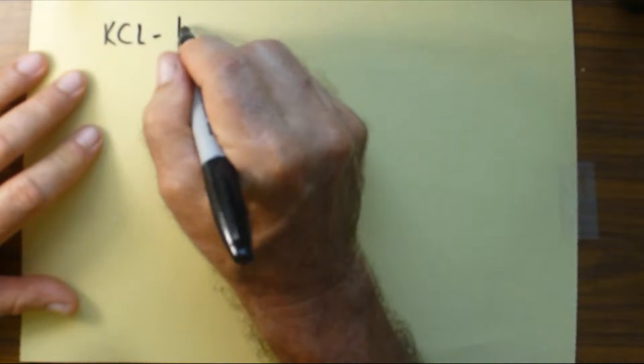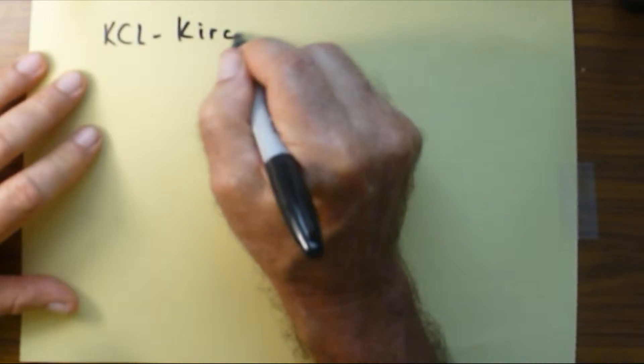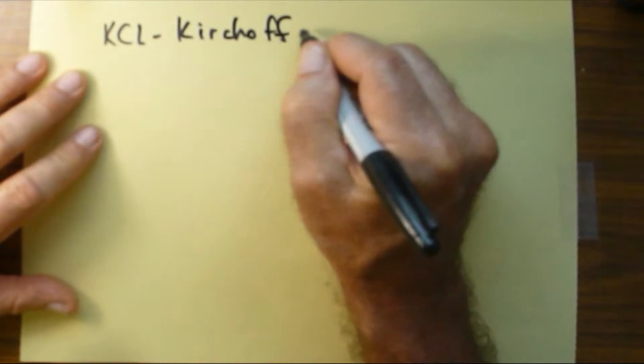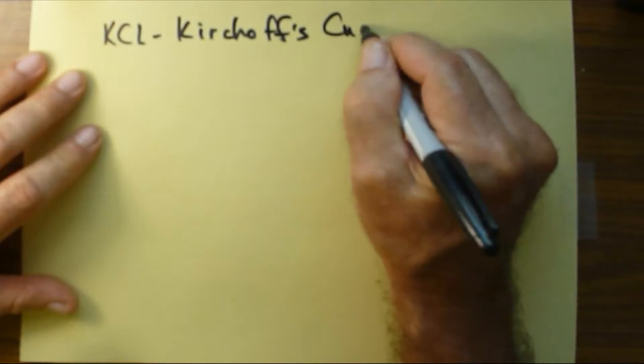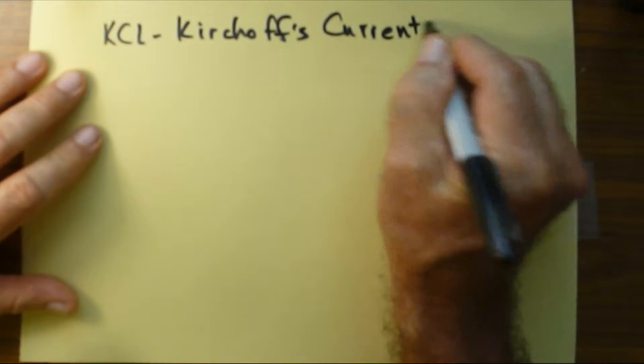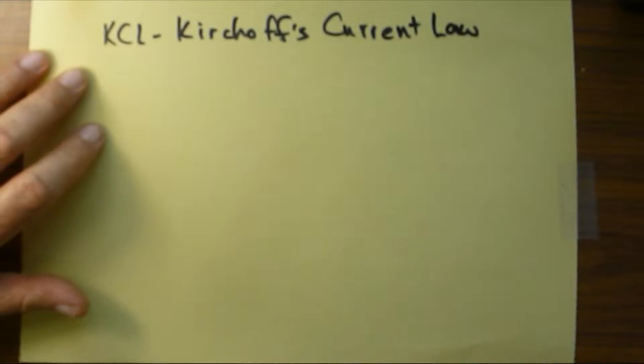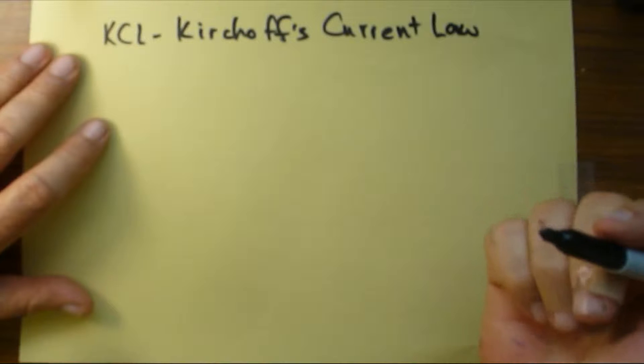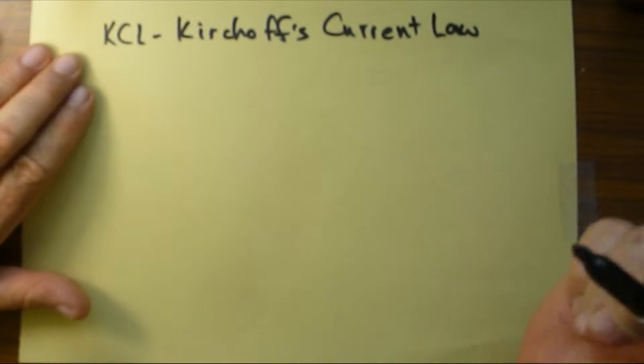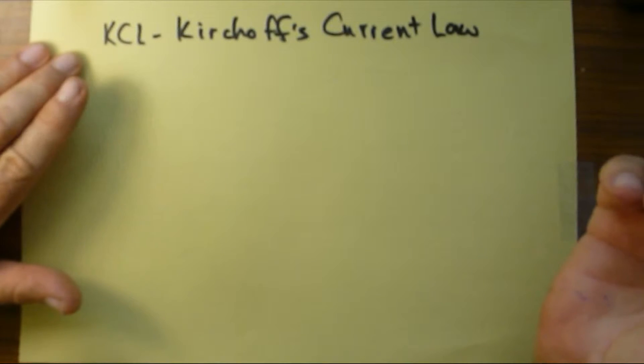This is my KCL video. KCL stands for Kirchhoff's Current Law. What this law says is that all of the currents going into a node must equal all of the currents going out of a node.